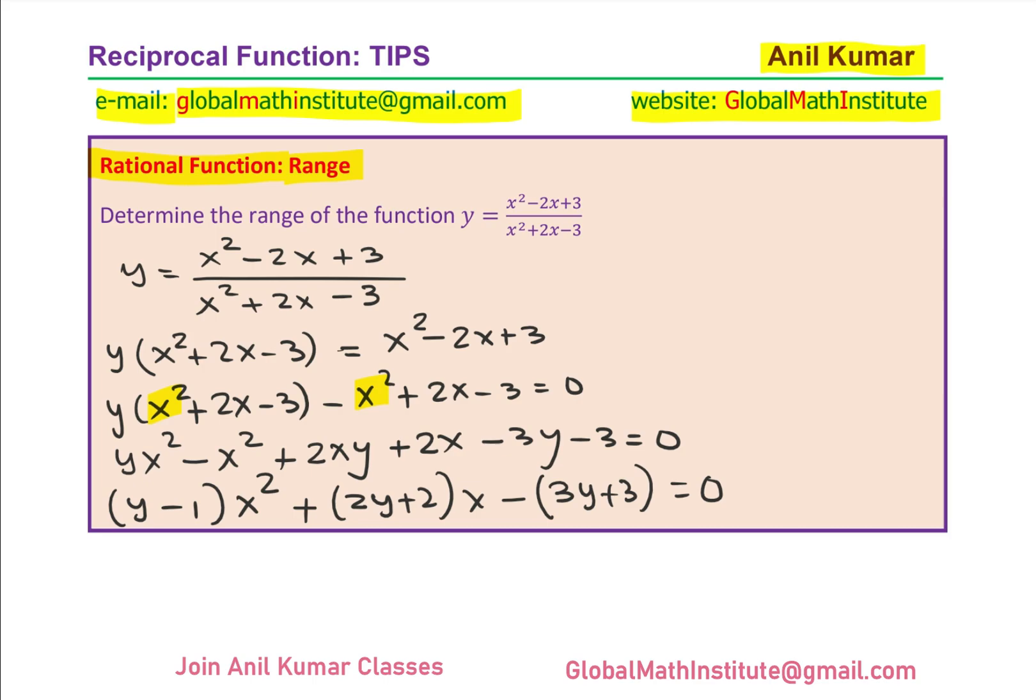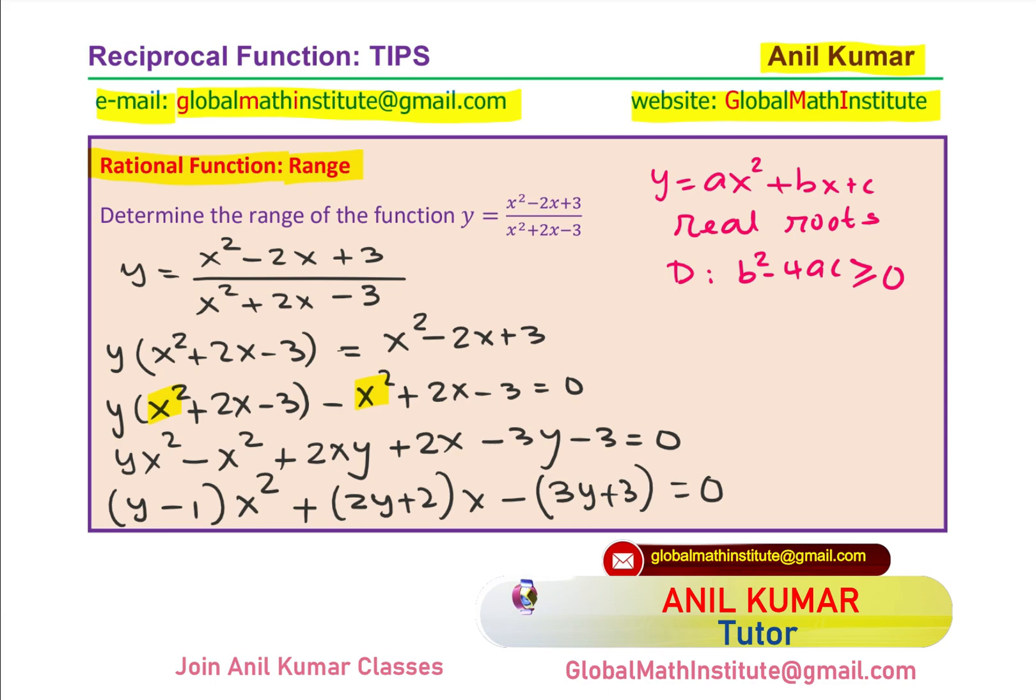Now we understand the concepts of quadratic equation. A quadratic equation of the form y equals to ax square plus bx plus c will have real roots only if the discriminant is non-negative. So discriminant, which is b square minus 4ac is greater than or equal to 0. Now in our case, if you compare,